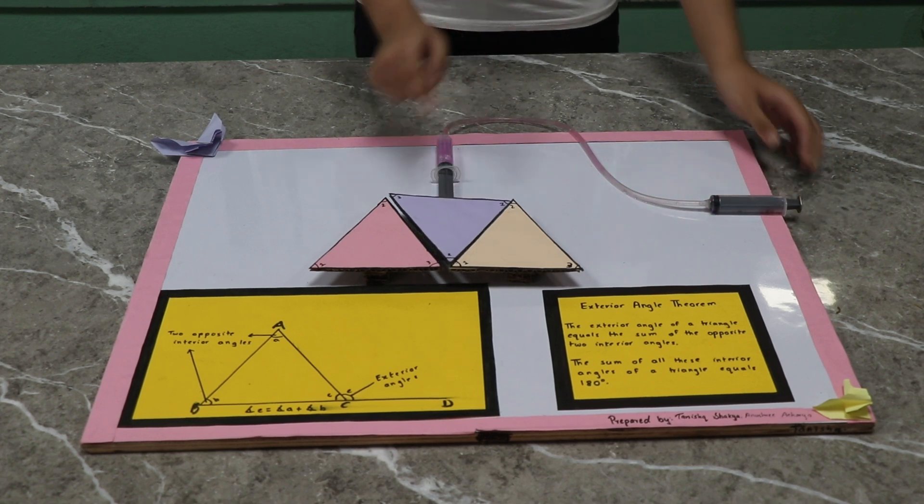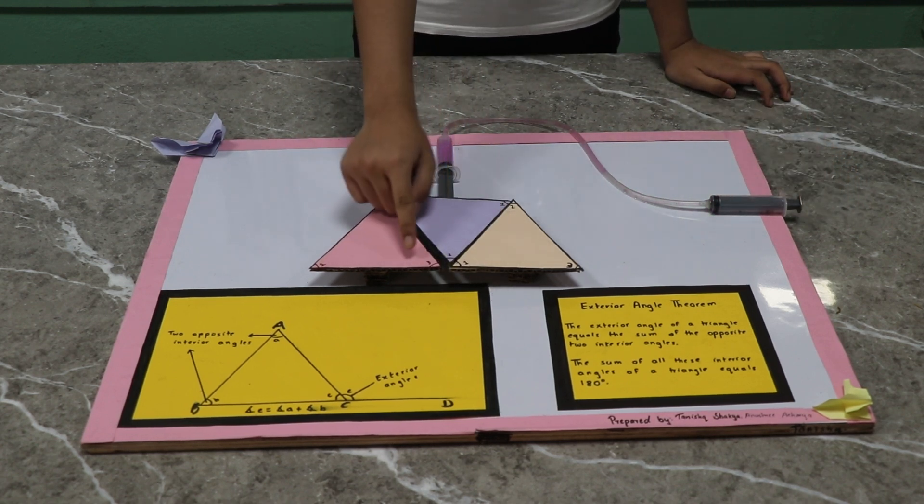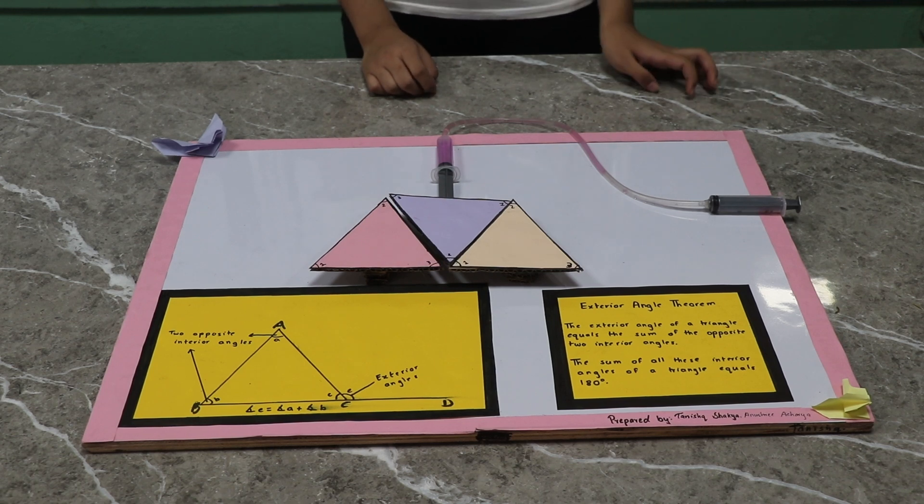When we push this triangle, it forms a straight line where the sum of 3, 2, and 1 is always equal to 180 degrees.